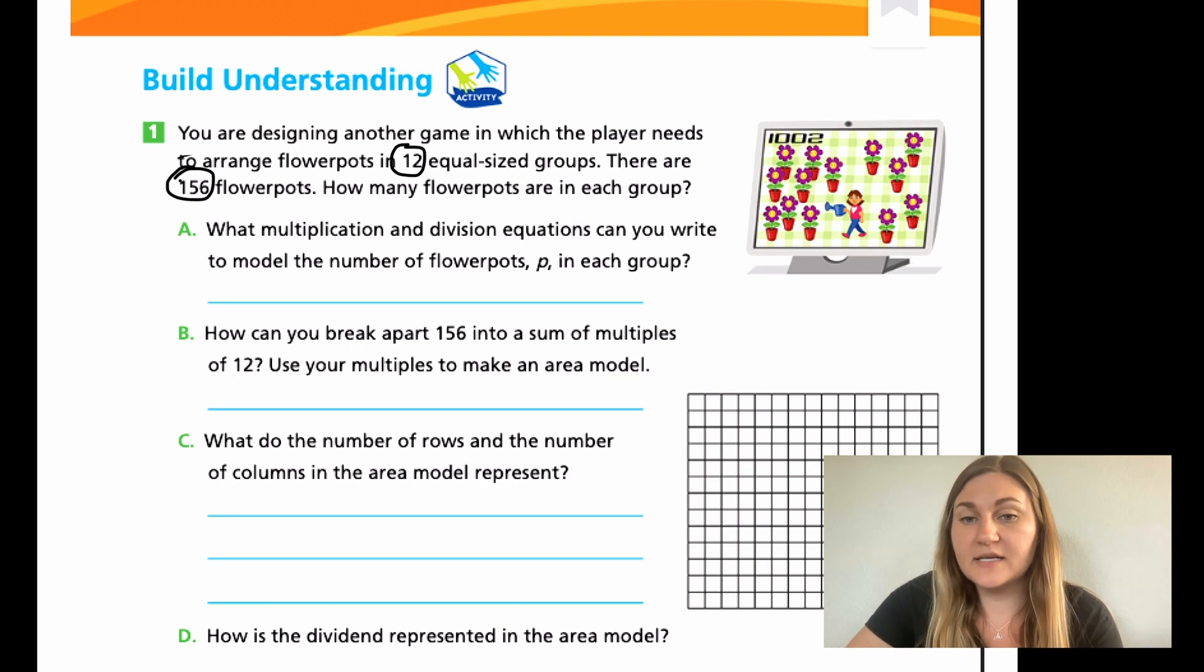Instead of having you pause here and do the entire thing, I'm just going to have you do a couple at a time because I know this problem is pretty in depth. So, what I'm going to have you do is just do question A for right now. It says, what multiplication and division equations can you write to model the number of flower pots P? So, in that number that you don't know, put a P. You're writing both a multiplication and the division equation. Go ahead and do that now.